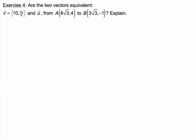In exercise 4 we are asked if the two vectors v and u are equivalent. Now vector v is given in polar form but vector u is given as a directed line segment between two points so I'm going to call it vector AB which is going to be my delta x comma delta y again using rectangular brackets for the rectangular components. And so we take the x final minus x initial which is 3 root 3 minus 8 root 3 which is negative 5 root 3.